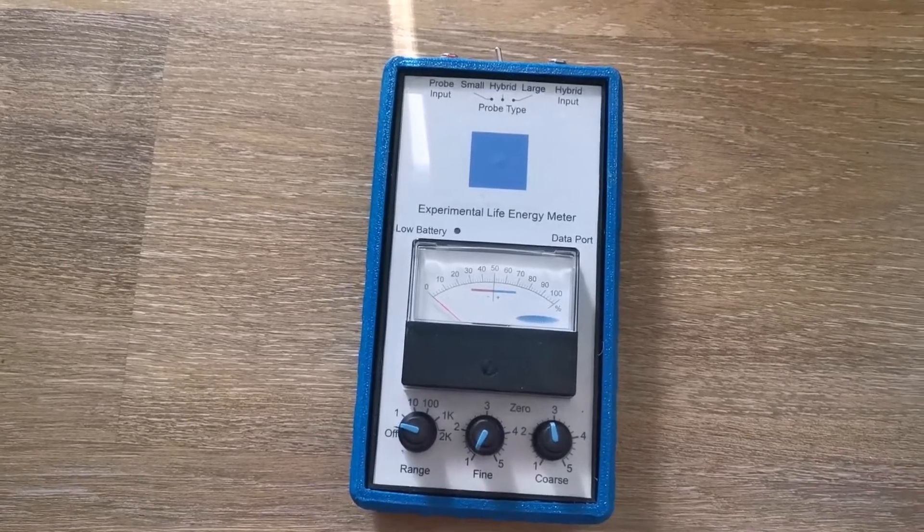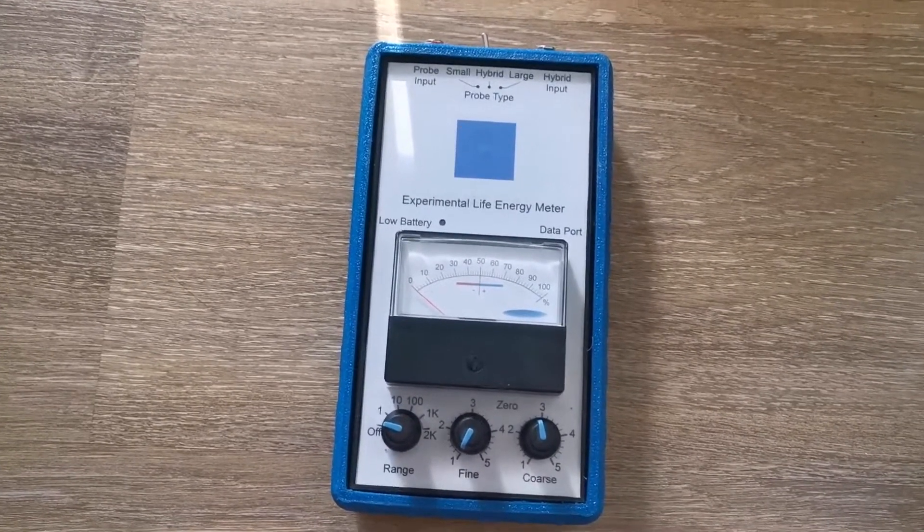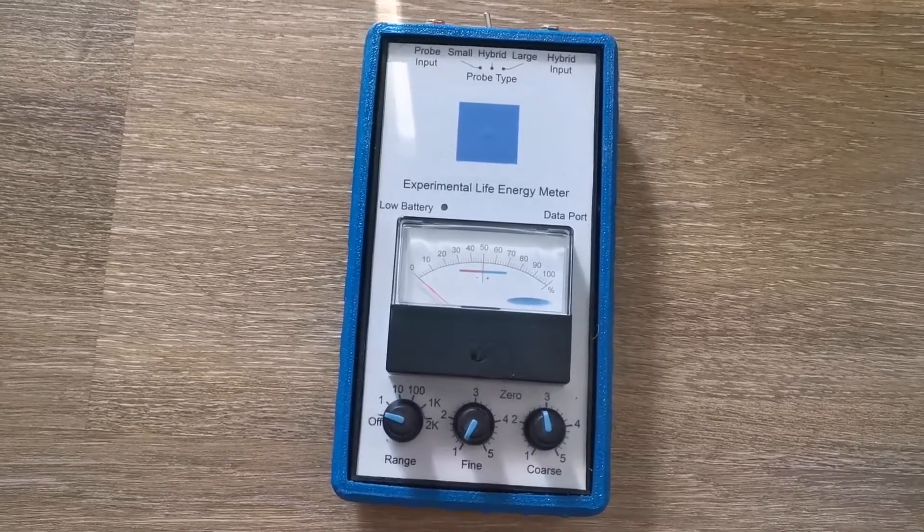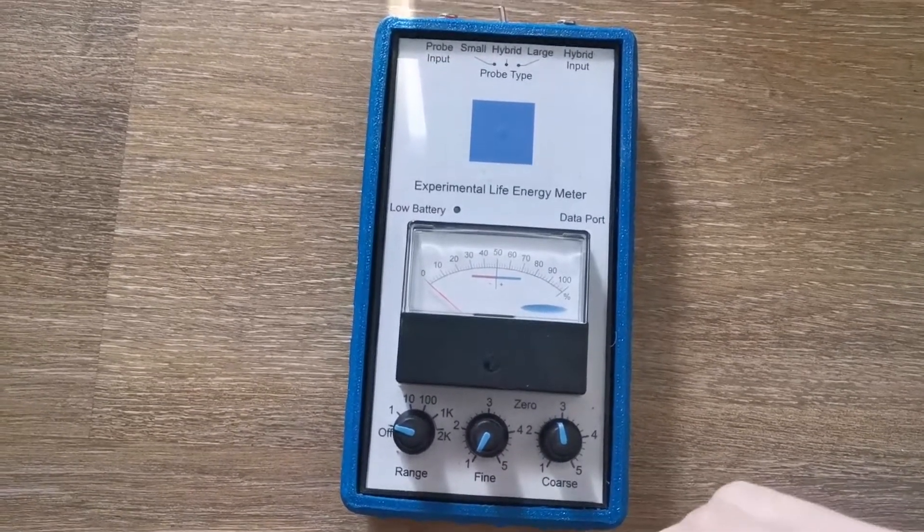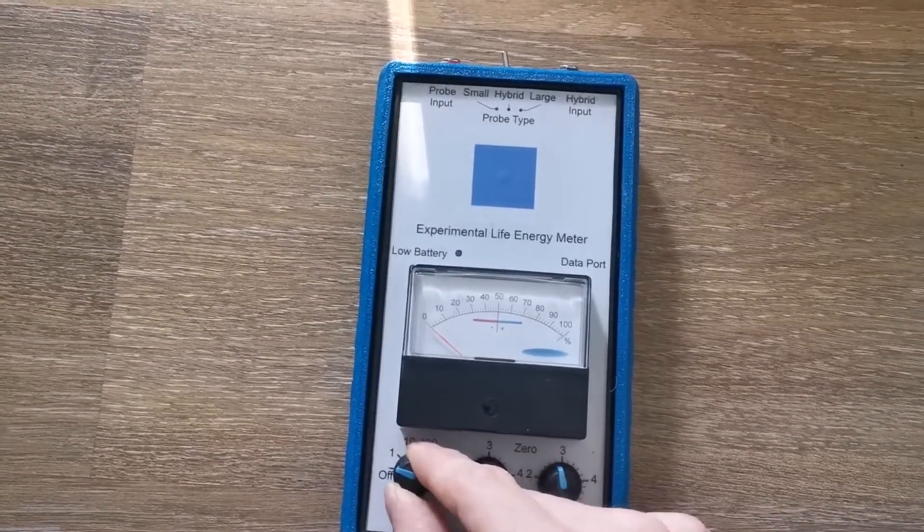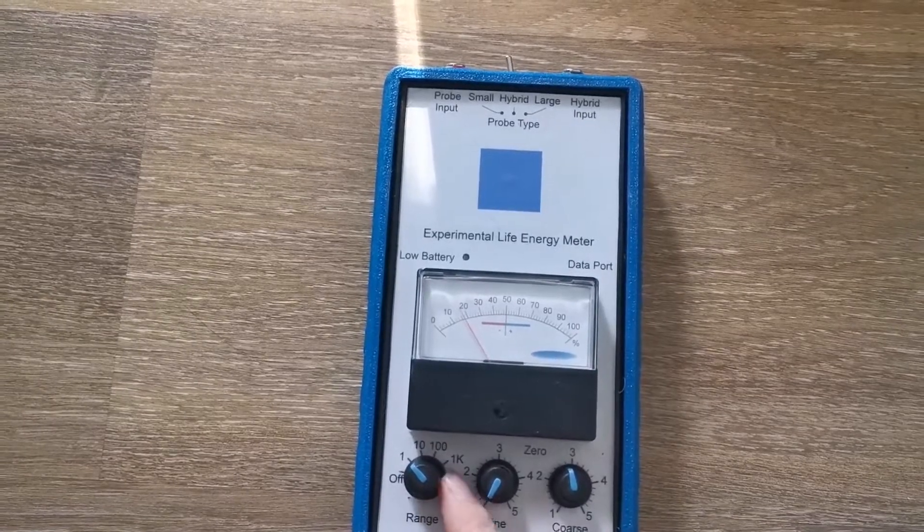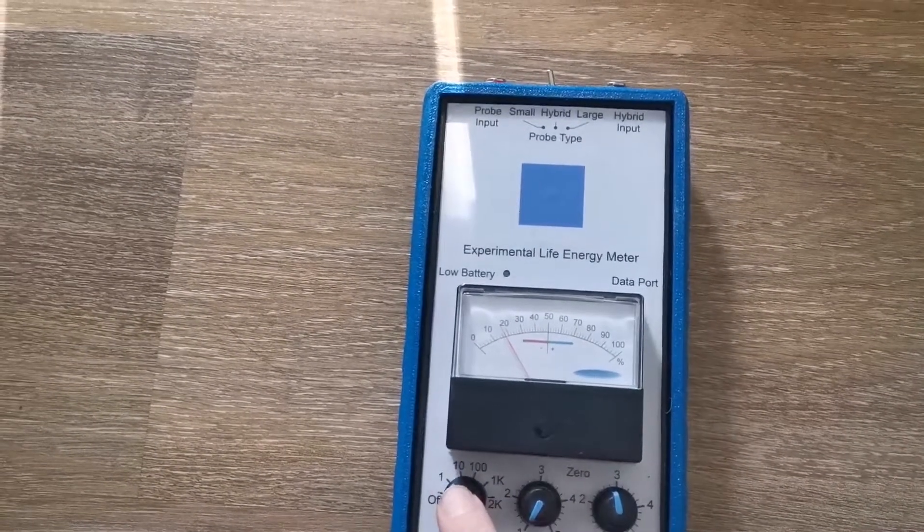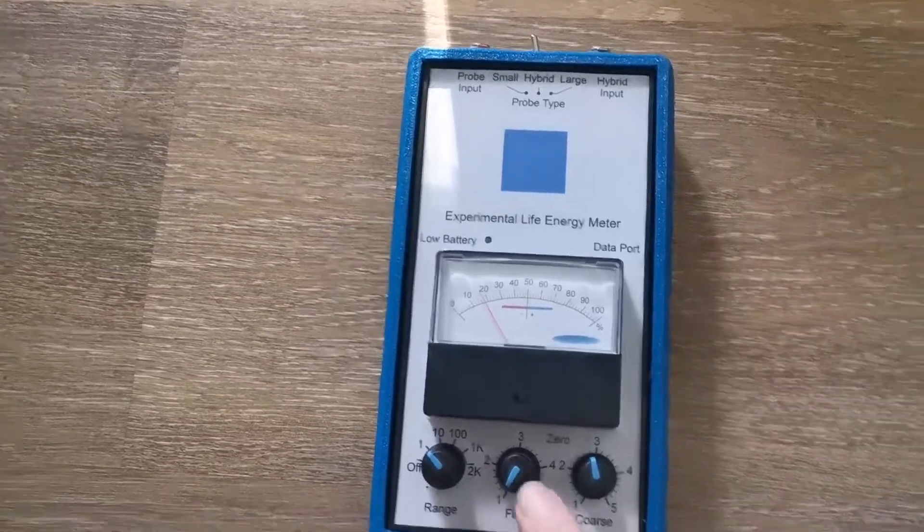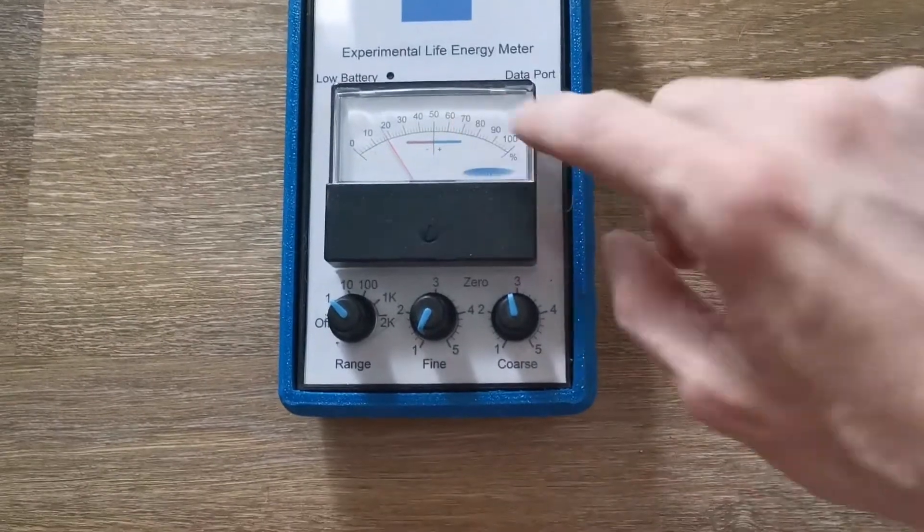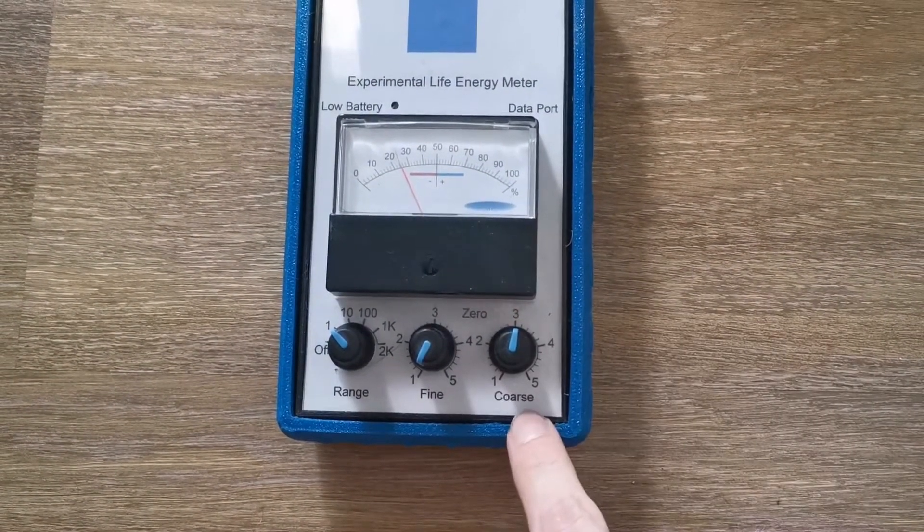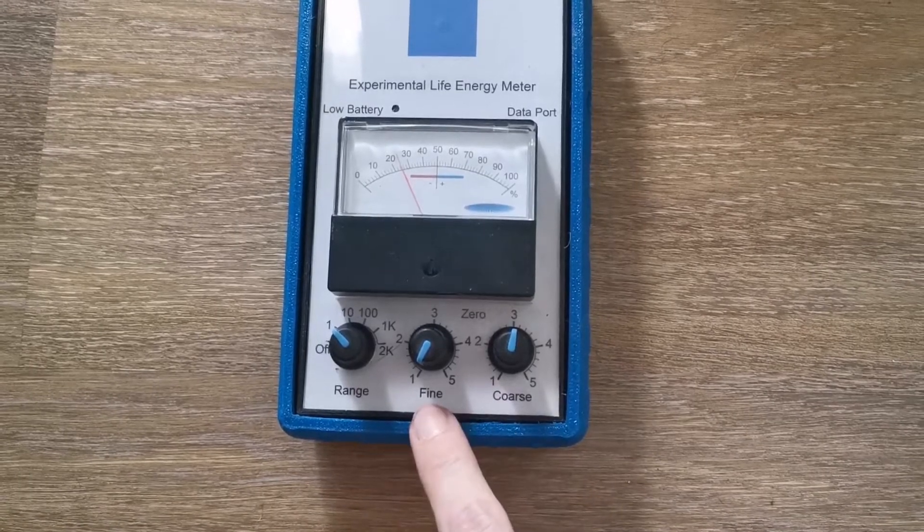Let's first start with some explanation of how the device is operated. We basically have a range selector. You can choose 10, 100, 1 kilo and 2 kilo. This is the amplification factor. Here you can adjust the needle where it is positioned. You have one for coarse positioning and one for fine positioning.